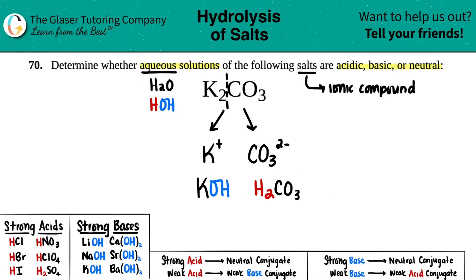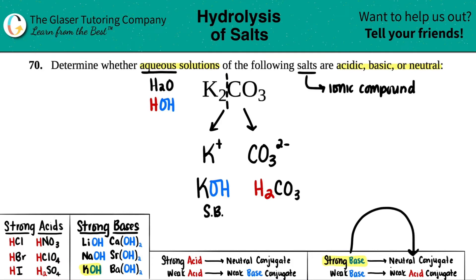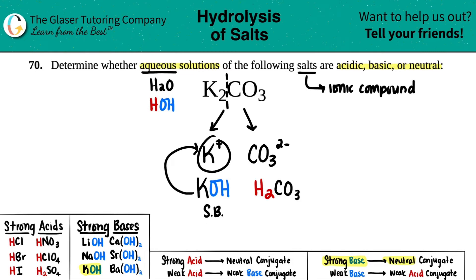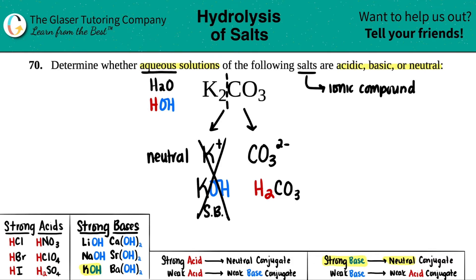Let's talk about KOH first. Is potassium hydroxide a strong acid or a strong base — is it one of the six strong acids or strong bases? Yes, it is. It's a strong base. Any time you have a strong base, the conjugate is so weak that it's basically deemed neutral. So any time you form a strong base, the conjugate it came from is classified as neutral, and since it's neutral, it has nothing to do with acidic nor basic properties.